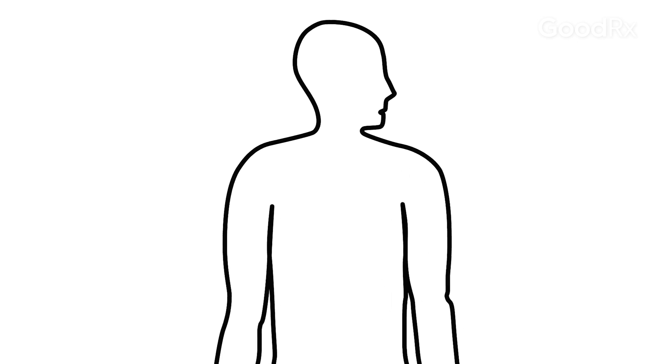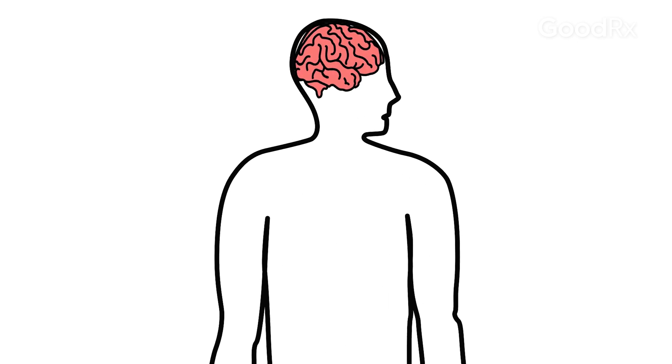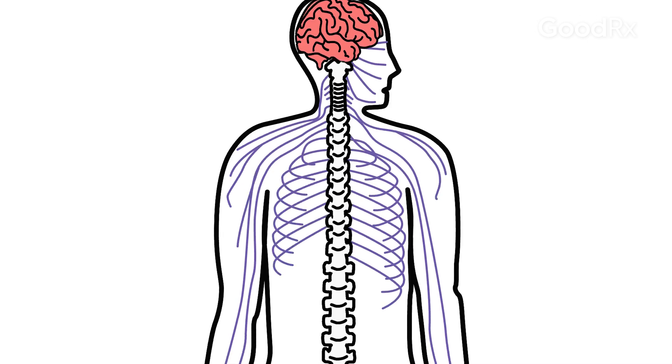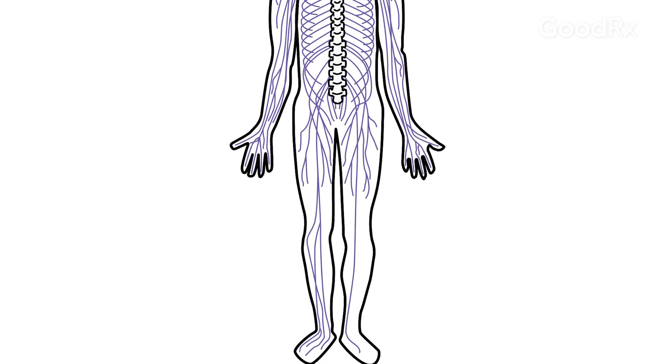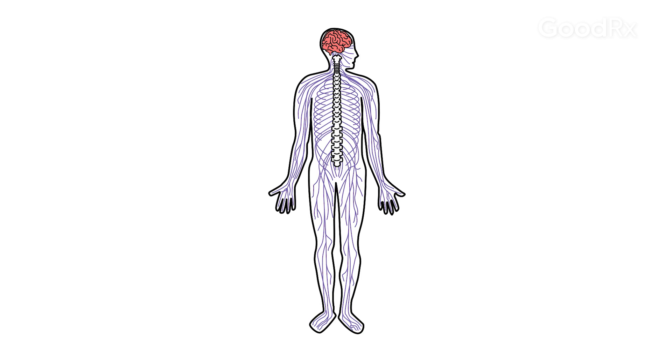Say a patient has a numbness in their hand — they might go to their primary doctor, who refers them to the neurologist. The neurologist will listen to the story and do an examination. What we're looking for is signs that it's actually something occurring in the central nervous system compared to the peripheral nervous system.